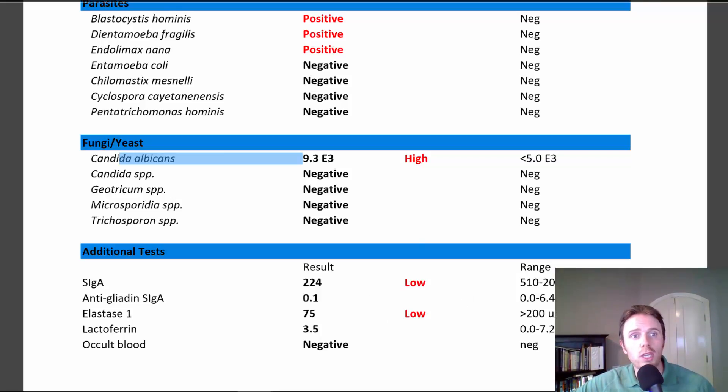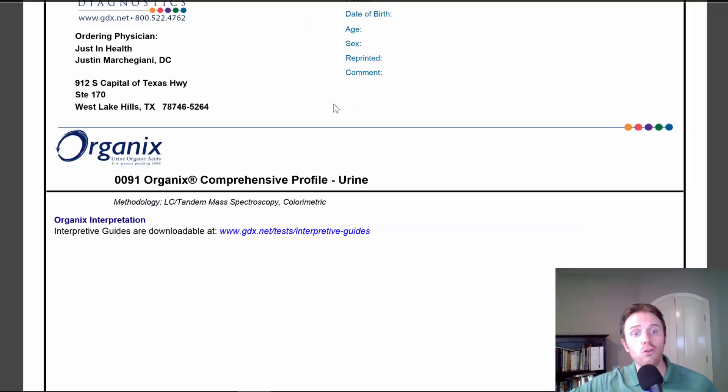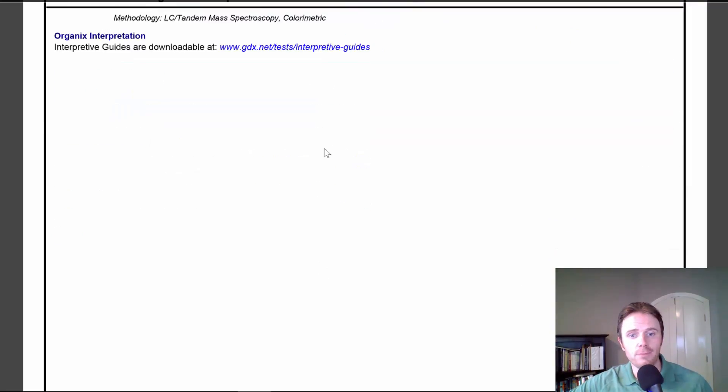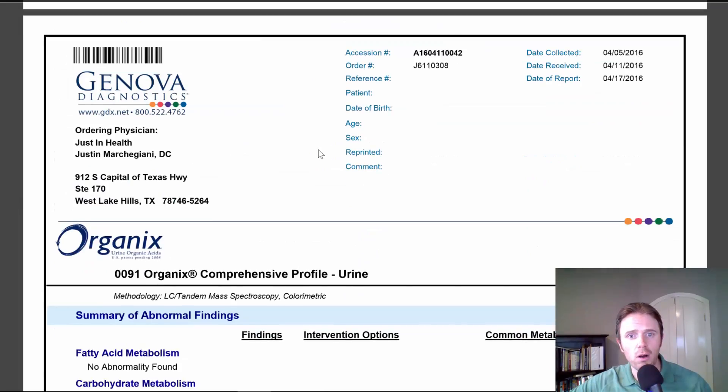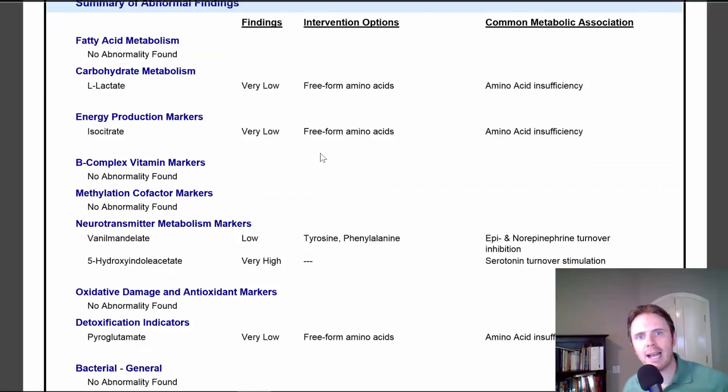So let's switch gears and go to the organic acid test because this will give us a window into other companion nutrients that's going on in the body. So down the list we go. This is the summary page. Real quickly about organic acids.